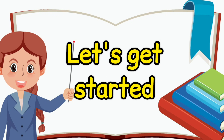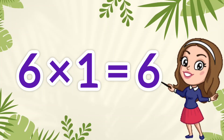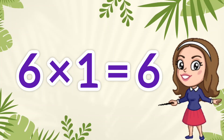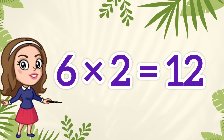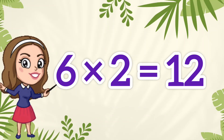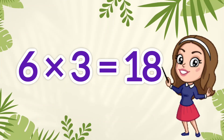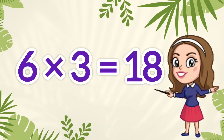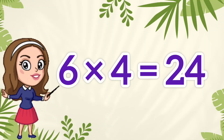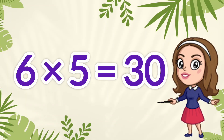So let's get started. 6 1s are 6, 6 2s are 12, 6 3s are 18, 6 4s are 24, 6 5s are 30.